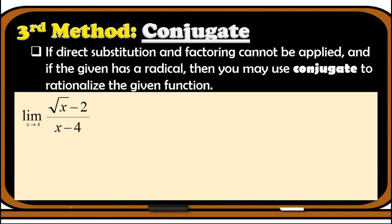Let us evaluate the limit of square root of x minus 2 over x minus 4 as x approaches 4. Applying the concept of conjugate, we multiply both numerator and denominator by the conjugate of the expression with the radical, which is the numerator.